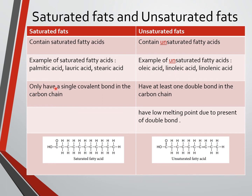Saturated fats have only single covalent bonds in the carbon chain. Unsaturated fatty acids have at least one double bond in the carbon chain, and unsaturated fats have a low melting point due to the presence of those double bonds. Saturated fats, by comparison, have a higher melting point than unsaturated fats.